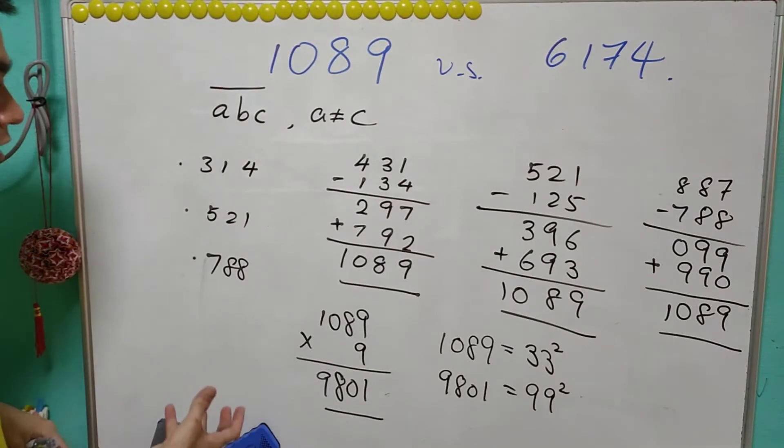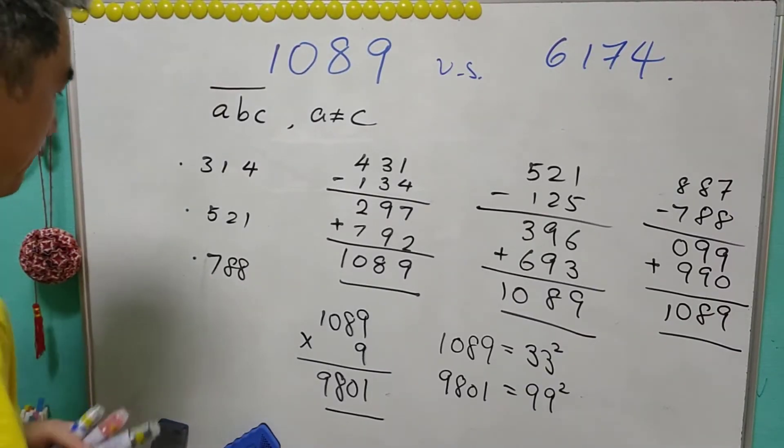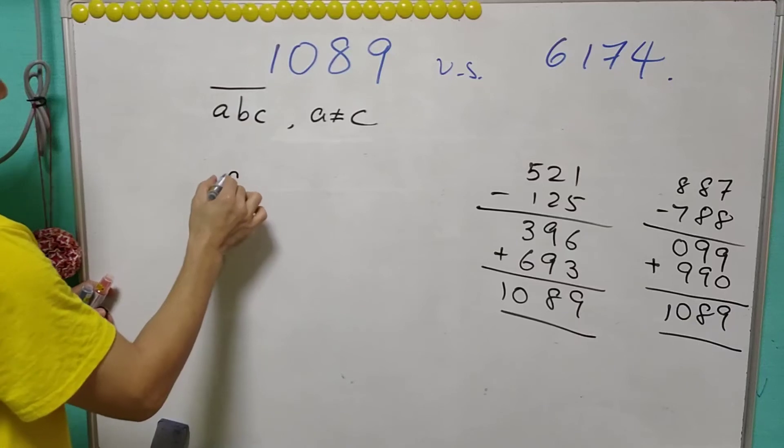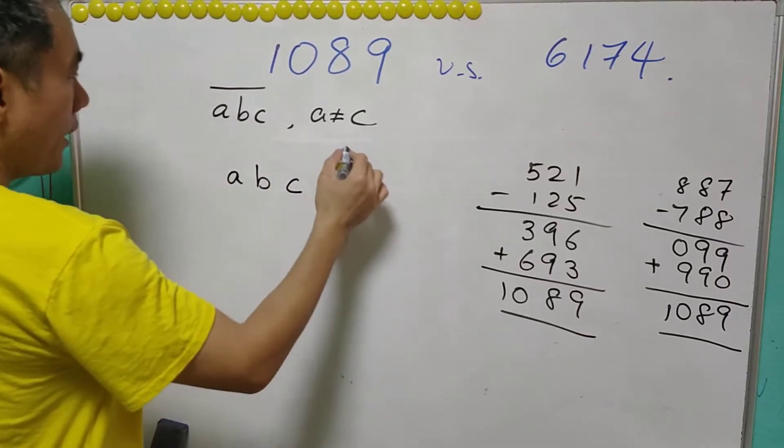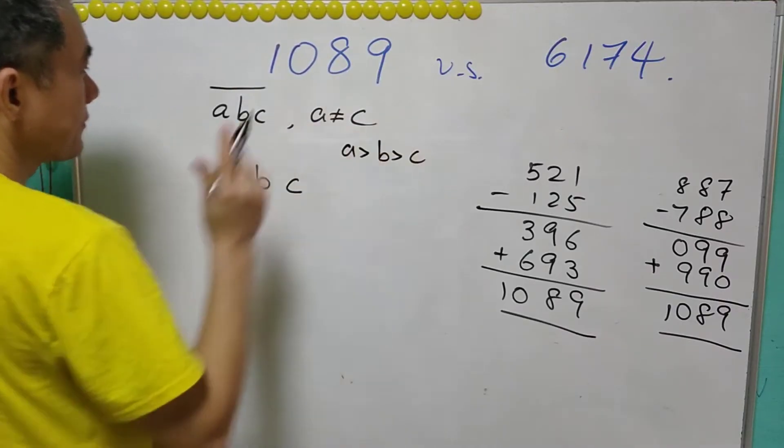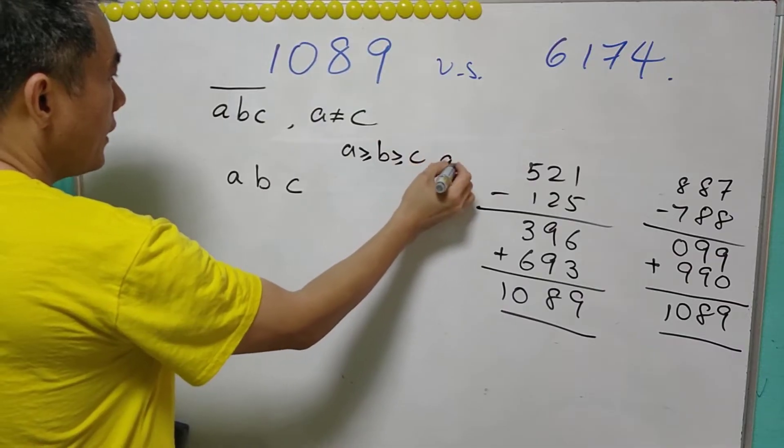Next we are going to give a proof why it is always 1089. So say we have a three digit number ABC where A is greater than B, greater than C. They can be equal, but A not equal to C.